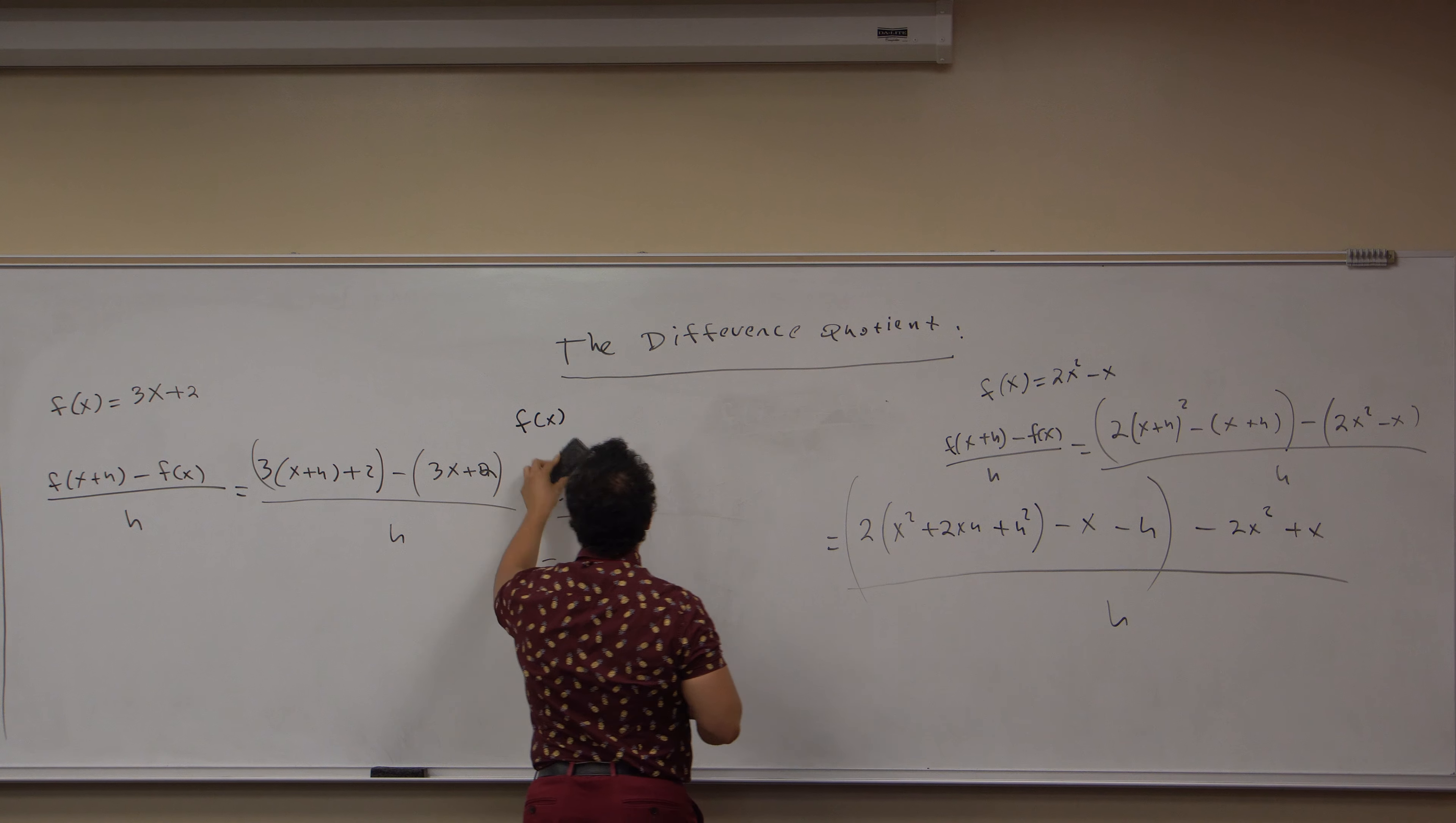Now I notice that this term has an h, this term has an h, this term has an h. I can pull out an h out of each of them. Doing so, clear up some room. Doing so results in an h out here. I have 4x plus 2h minus 1, because that's what happens when we send it back in, all over h.